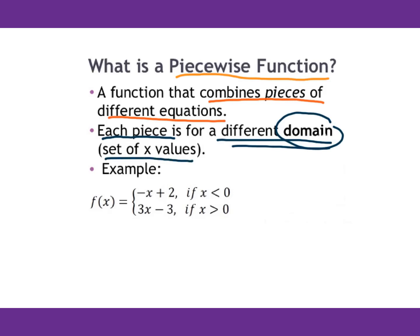For example, f(x) equals negative x plus 2 if x is less than 0, and f(x) equals 3x minus 3 if x is greater than 0. Therefore, when the domain is different, you will get a different function.